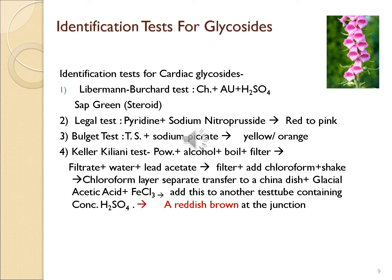These are four important tests for identification of cardiac glycosides. First is the Liebermann-Burchard test: take the powder, add chloroform and acetic anhydride, then slowly add sulfuric acid — a sap green color indicates presence of steroidal glycoside. Second is the Legal test: take the powder, add pyridine and sodium nitroprusside — it shows red to pink color.